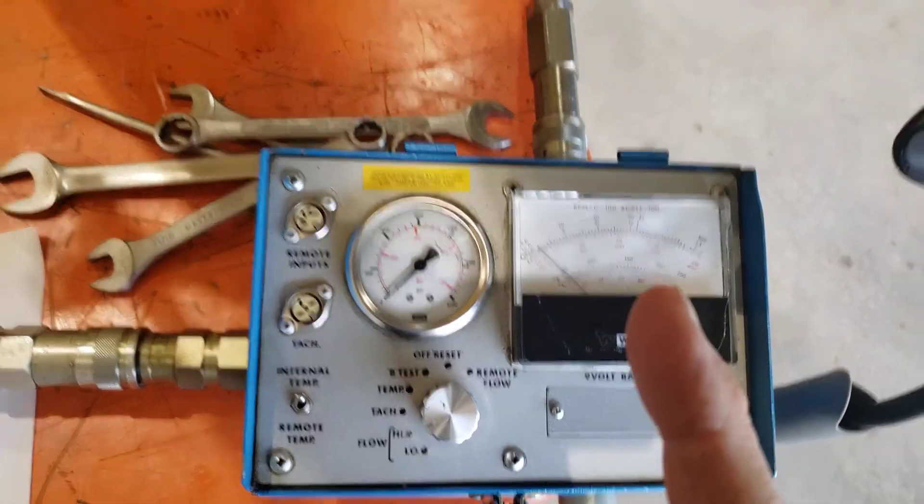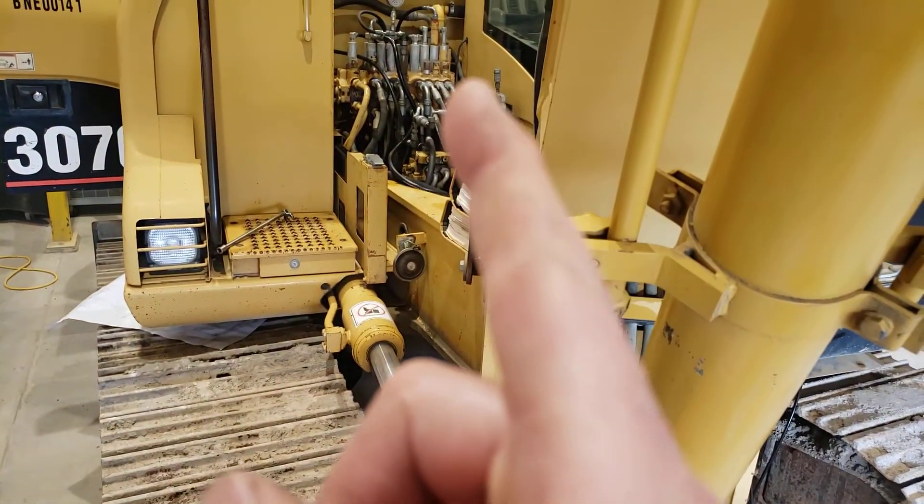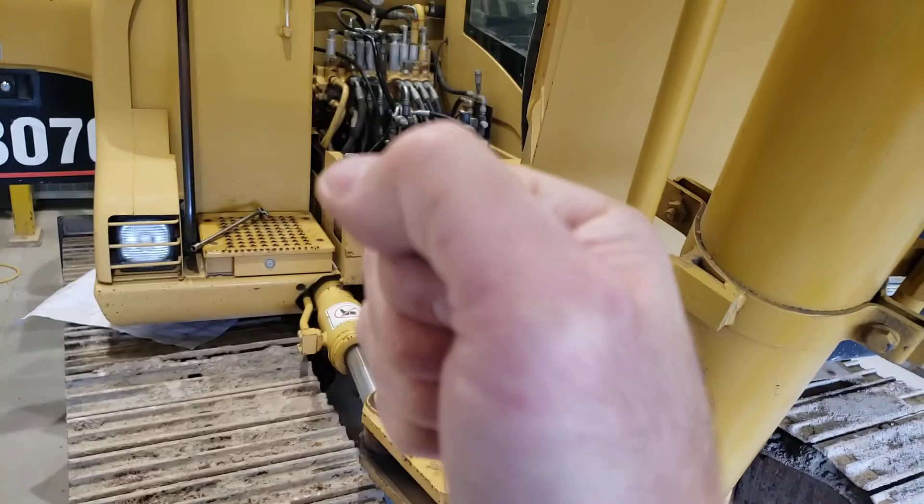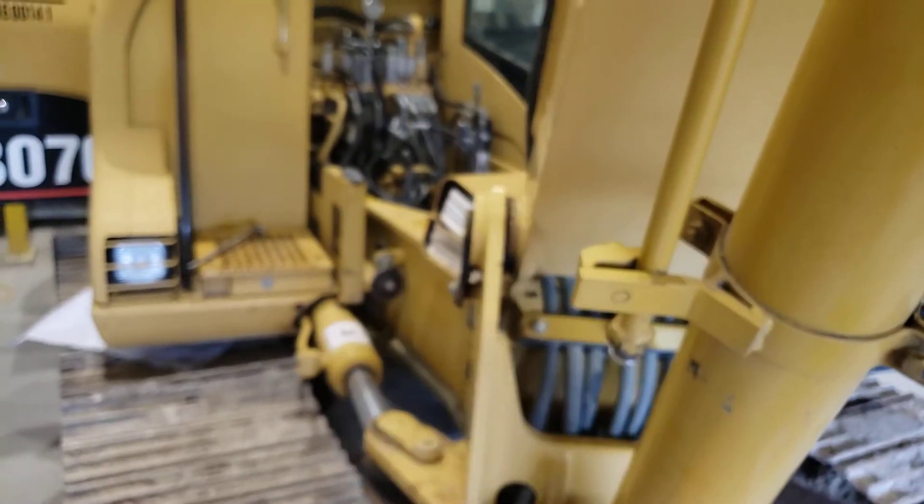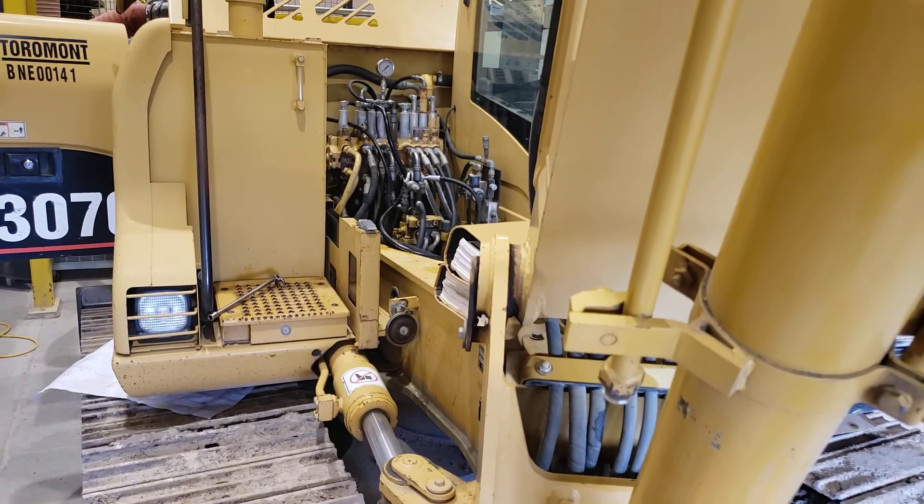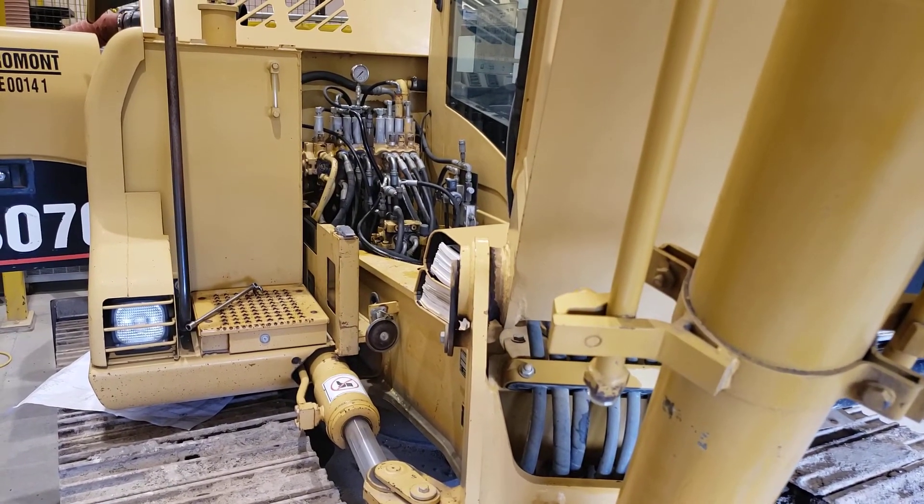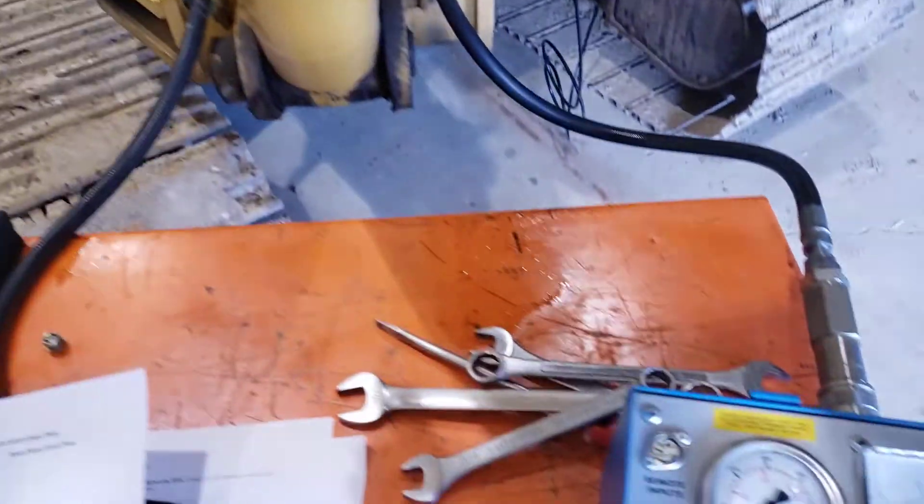But by doing that, then I'll be able to see where my transition point is as I feather the boom control for boom raise, where the transition point is between the boom one spool moving and giving me boom one flow and the boom two spool moving and giving me boom two flow.